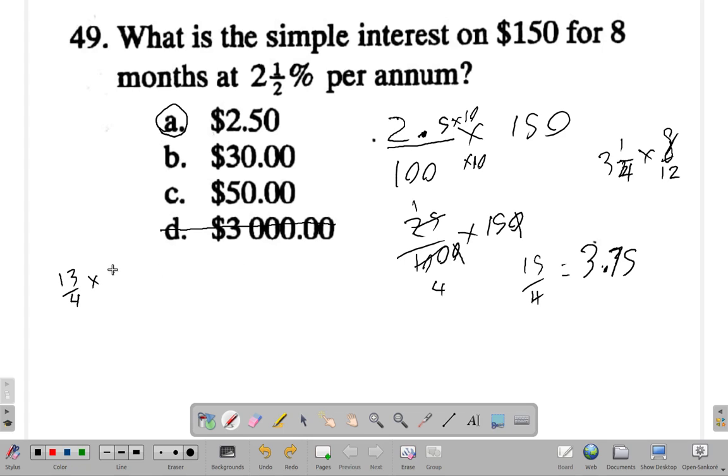3 times 2 is 6. 2 into 2 is 1, 2 into 4 is 2. So you're looking at 13 over 6, which is 2 point...